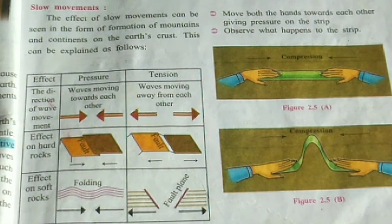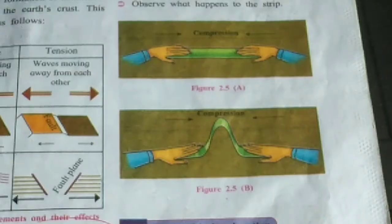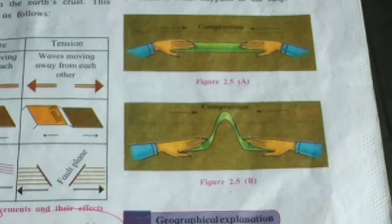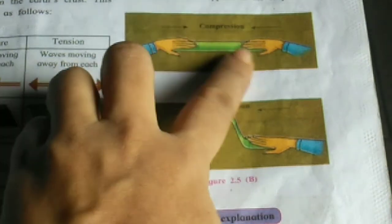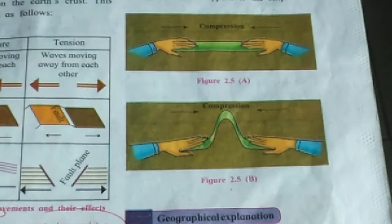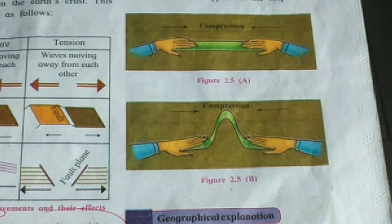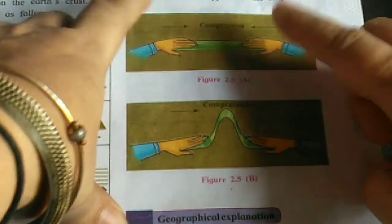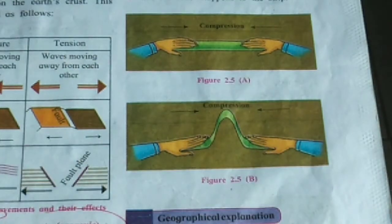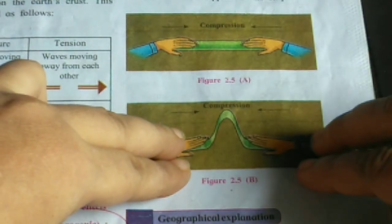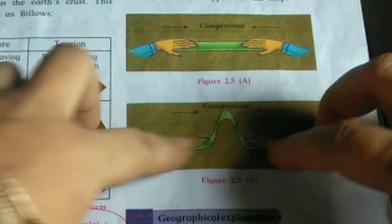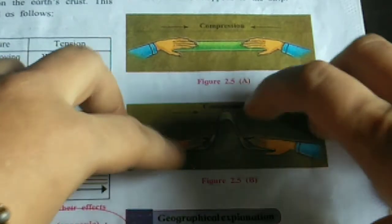Now we are going to see mountain-building movements — that is, orogenic movement. Activity one: take a 30-centimeter long strip. Place your hands on both ends of the strip. Move both hands towards each other giving pressure on the strip. You can see here that both hands are moving towards each other and pressure is applied, which is why a fold is formed.